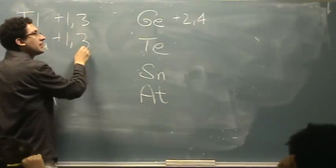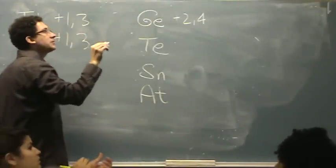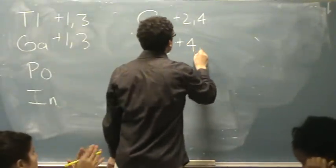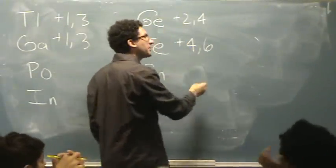Tellurium is in the, oh my goodness, one, two, three, fourth column. Yeah, it's +4 and +6. It could have a negative charge too,